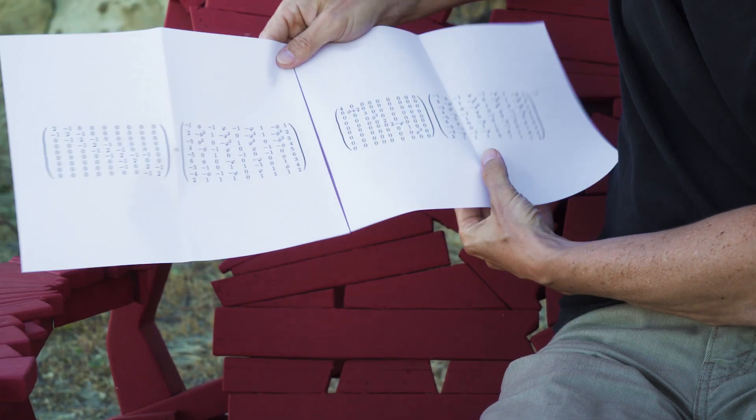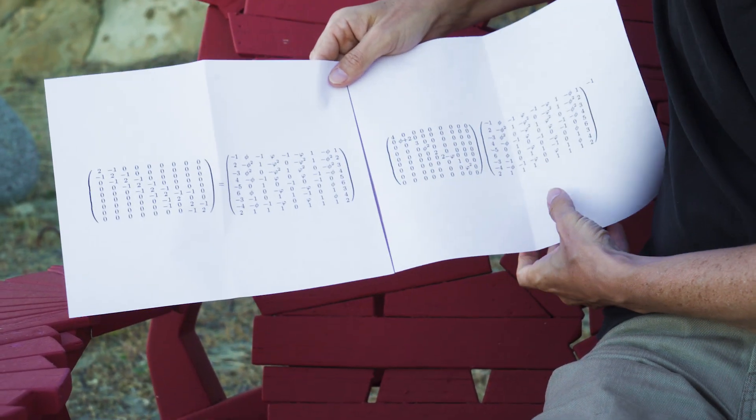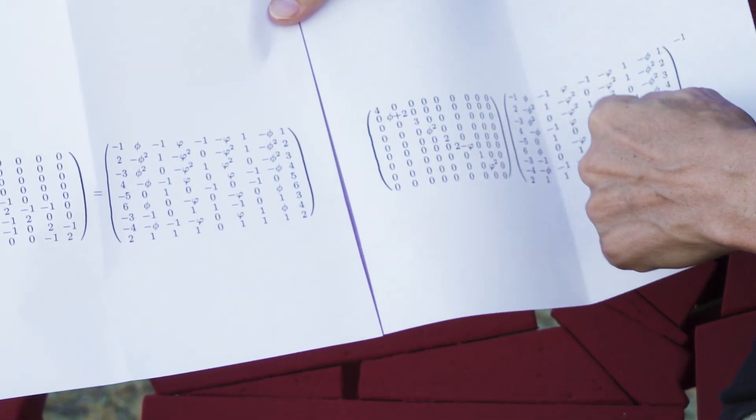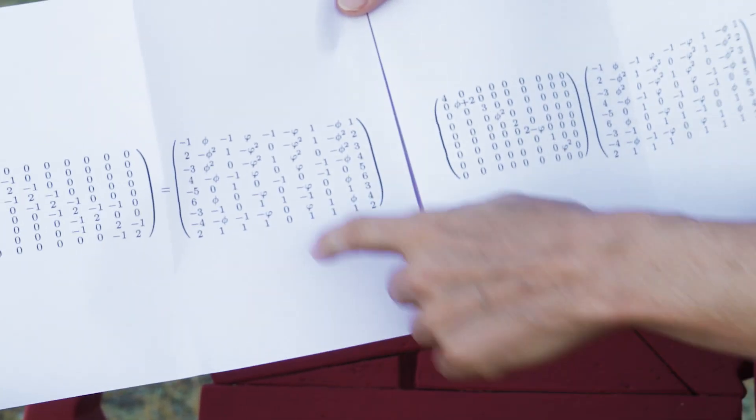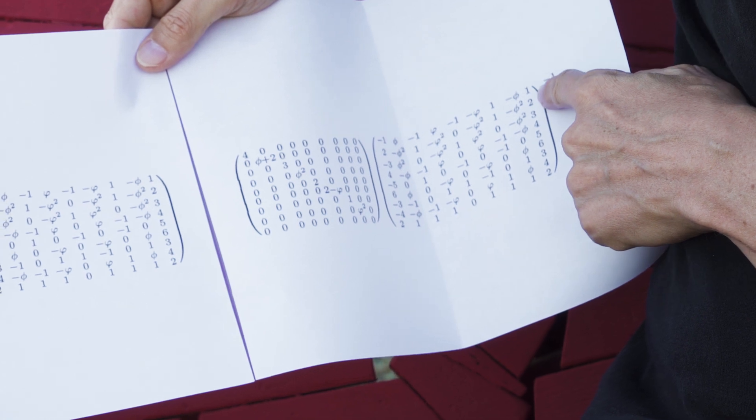So this is a unique process which will give you a diagonalization which is a diagonal matrix and two other matrices which are the matrix of the eigenvector which is one matrix here and here this is the inverse of this matrix.